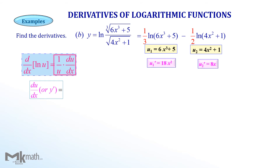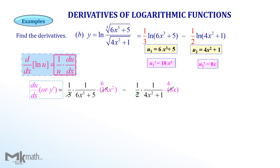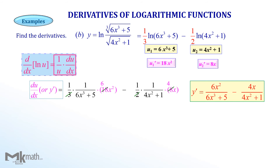For the first term, since the formula says 1 over u times u', we have one-third times 1 over (6x cubed plus 5) times 18x squared. For the second term, we have one-half times 1 over (4x squared plus 1) times 8x. Simplifying each fraction gives y' equals 6x squared over (6x cubed plus 5) minus 4x over (4x squared plus 1). Note that we cannot cancel terms since the denominators have two terms.